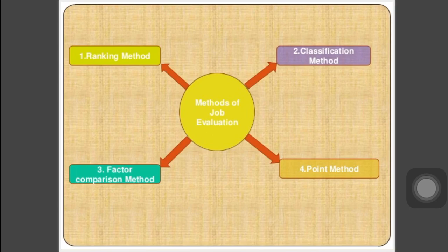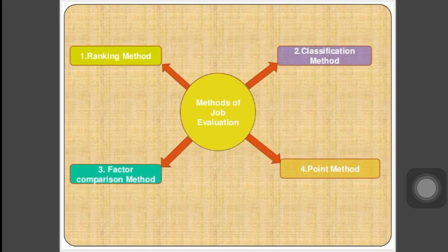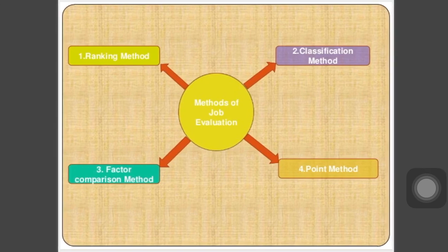Now we focus on today's part of the lecture: the methods of job evaluation. There are basically four methods — the ranking method, the classification method, the factor comparison method, and the point method. Based on the job categories, we select one of these methods for job evaluation. Let's try to understand all four methods in detail.